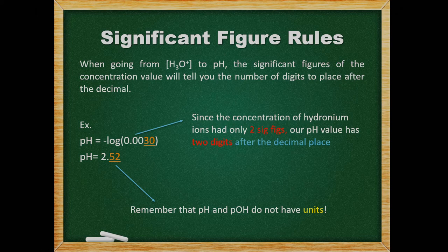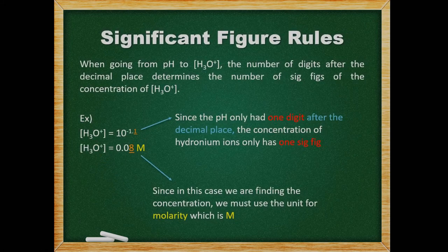Remember, pH and pOH do not have any units, as they are actually exponents or orders of magnitude rather than measurements. When going from pH to the concentration of hydronium ions, the number of digits after the decimal place of the pH value determines the significant figures of the concentration of hydronium ions. For example, what is the concentration of hydronium ions when the pH is 1.1? Since the pH only had one digit after the decimal place, the concentration of hydronium ions will only have one significant figure. Since in this case we are finding the concentration, we must use the units for molarity.